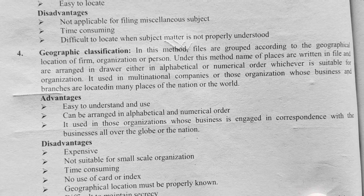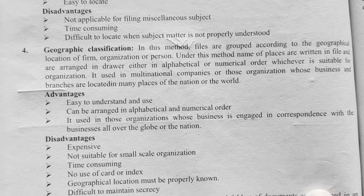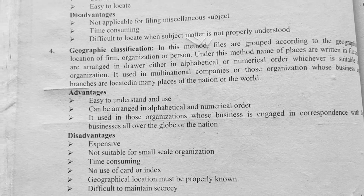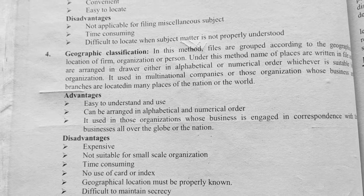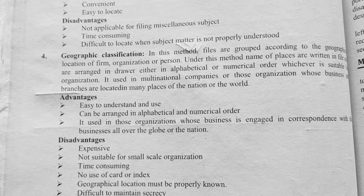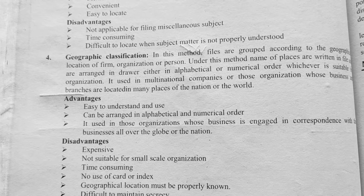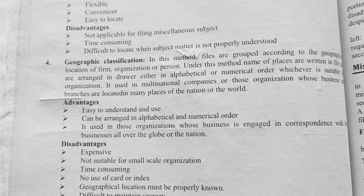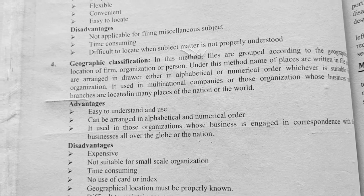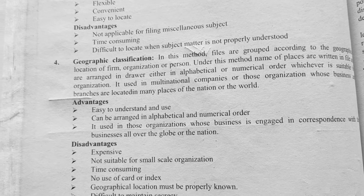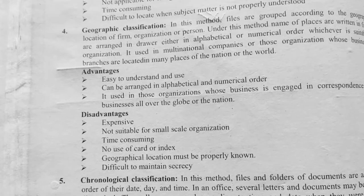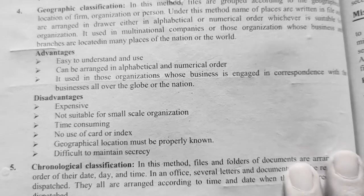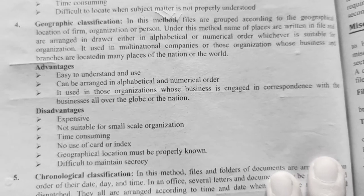Coming to another classification: geographical classification. In this method, files are grouped according to the geographical location of the firm, organization, or person. Under this method, the names of places are written in files and arranged in drawers either alphabetically or numerically, such as A, B, C, D or one, two, three, four. Here are some of the advantages and disadvantages of geographical classification.